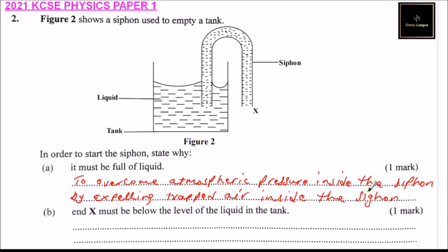So that is how you answer that. So part b: end X must be below the level of the liquid in the tank. This is the part X, you can see it is below the level of the liquid.